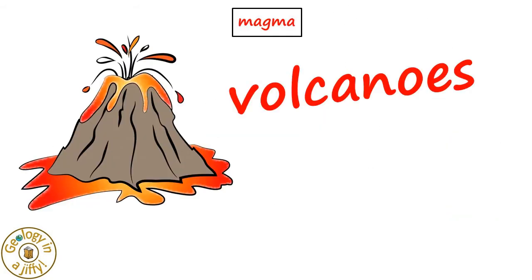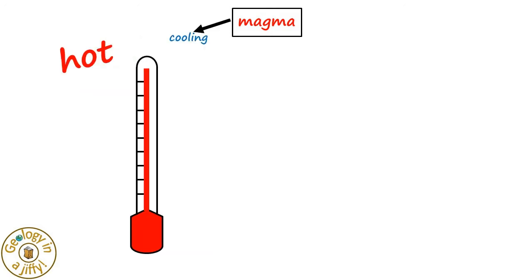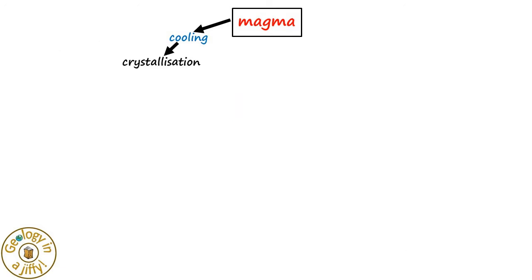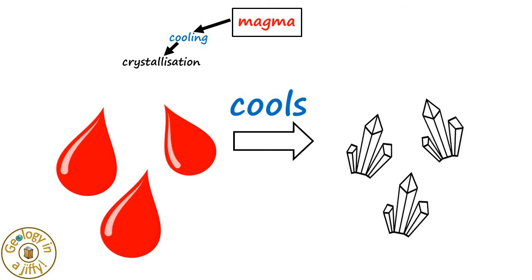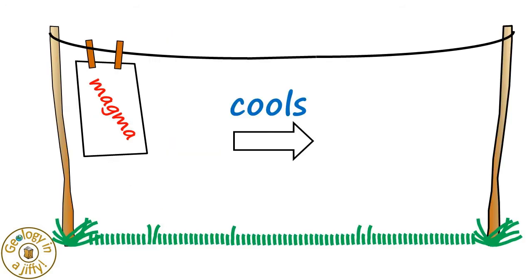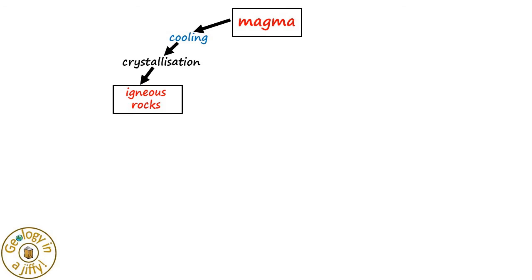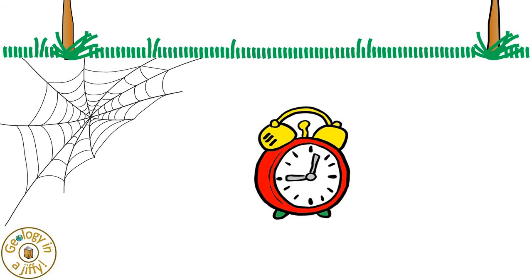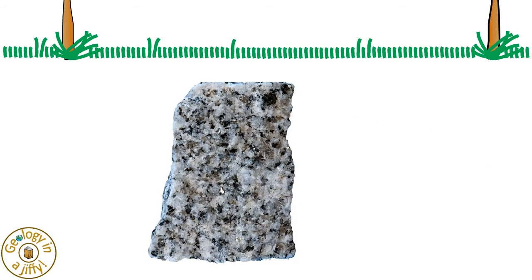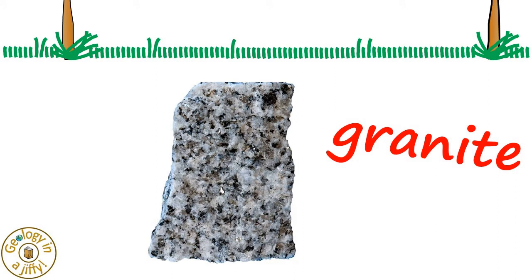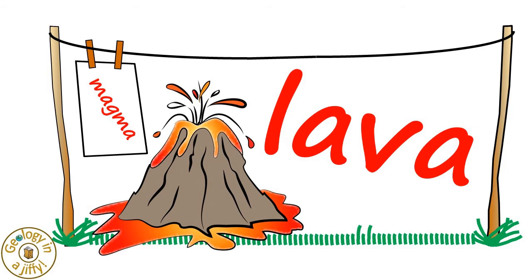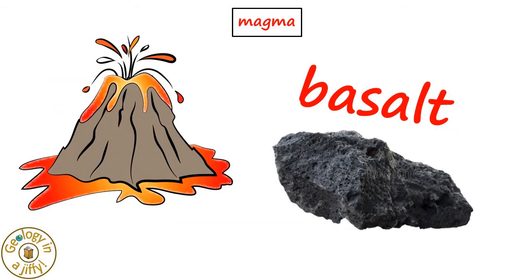So we know that magma extrudes at volcanoes and is hot. Because the lava is hot, it will cool and become colder. As it cools, it crystallises, forming igneous rocks. Sometimes magma cools underground, doing so very slowly over many millions of years, forming granite — an igneous rock made up of quite large crystals due to its slow rate of cooling. When volcanoes erupt at the surface, the resulting lava cools quite fast, forming igneous rocks with smaller crystals, such as basalt, a common example of a volcanic rock.